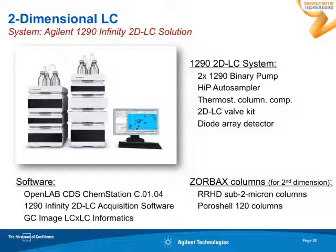Very important for data analysis of comprehensive 2D LC data, we also have powerful software from our partner company GC Image Incorporated — the LC Image software. This is a very powerful tool for automated peak identification and quantitation of comprehensive 2D LC data. It allows you to compare samples of different origins, shows differences between samples, and also differences in quantities of compounds across different samples — really a powerful tool to get information-rich data out of your comprehensive 2D LC run.